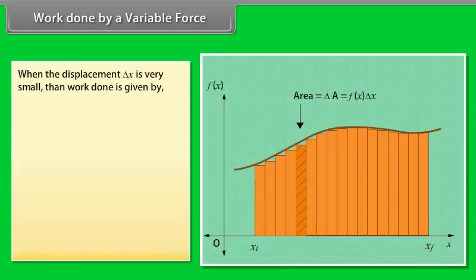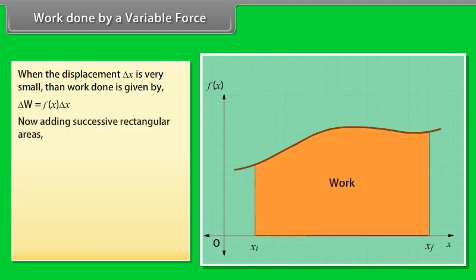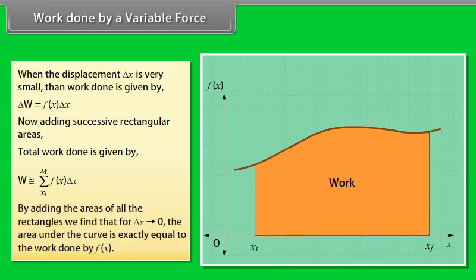Work done by a variable force. When the displacement delta x is very small, then work done is given by delta w equals fx delta x. Now adding successive rectangular areas, total work done by w is approximately equals to summation from initial position xi to final position xf of product of fx and delta x. By adding the areas of all the rectangles, we find that for delta x tends to zero, the area under the curve is exactly equal to the work done by fx.